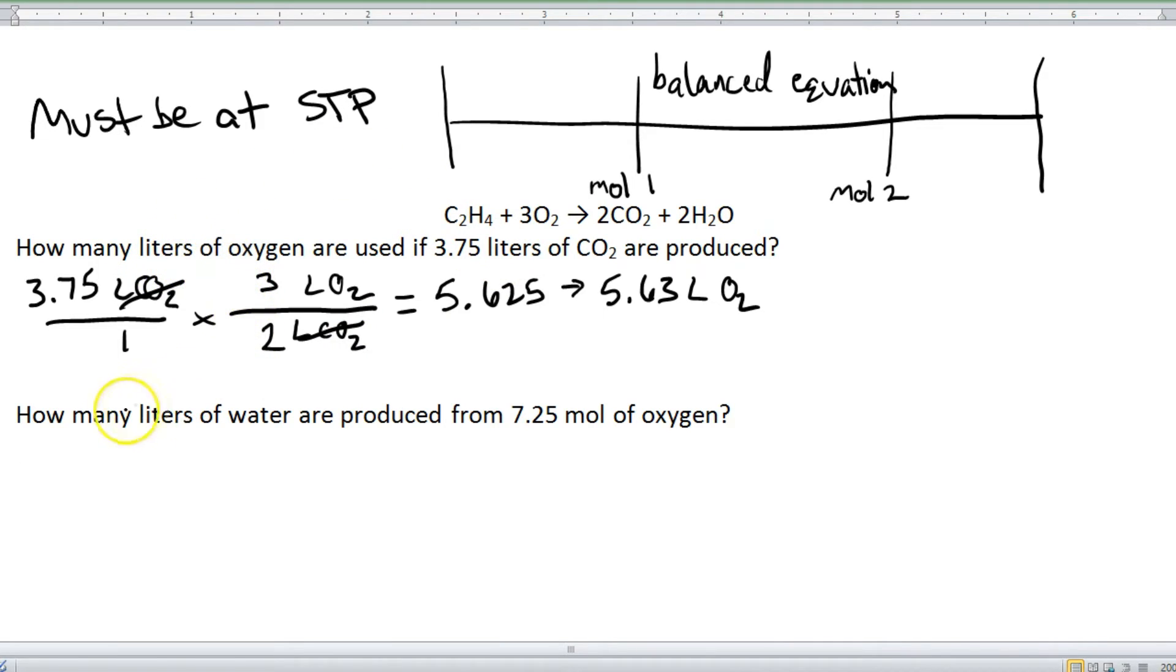But what if it's something like the second question? We have how many liters of water are produced from 7.25 moles of oxygen? So this is a moles-to-liters conversion. And this would also be the same if it was a liters-to-moles. So we're going to go back up to our molar express right here.